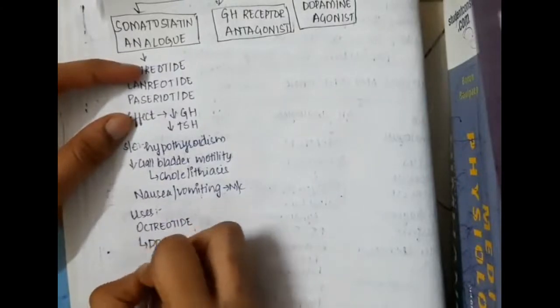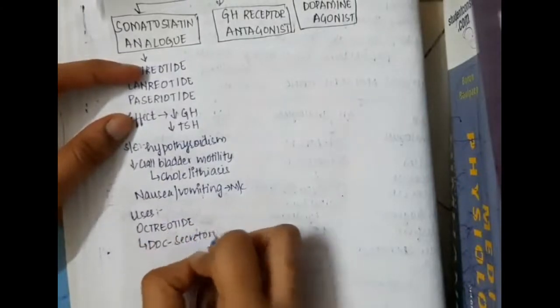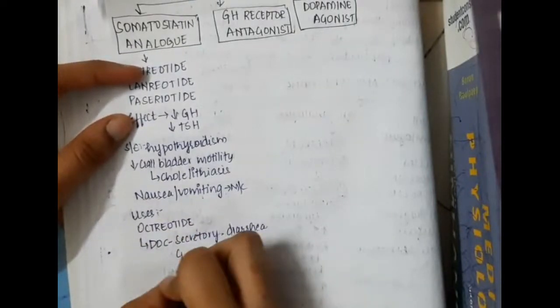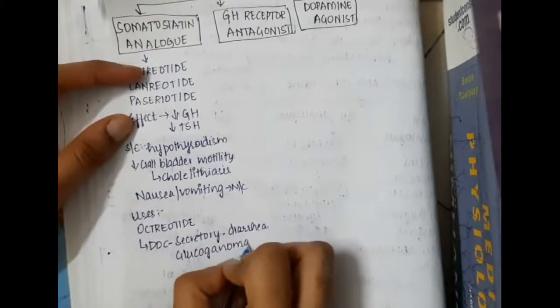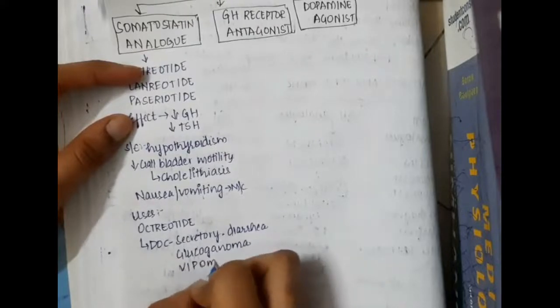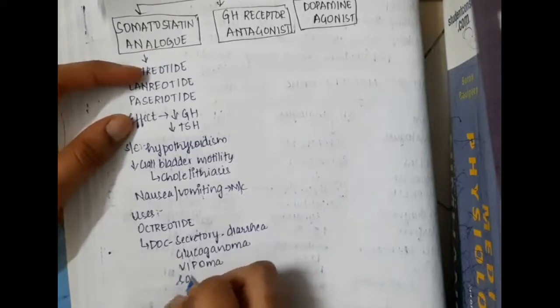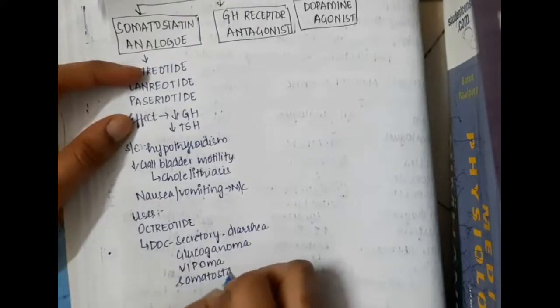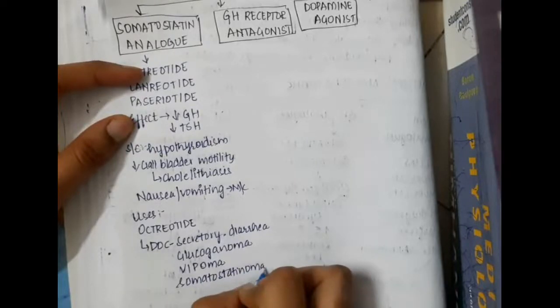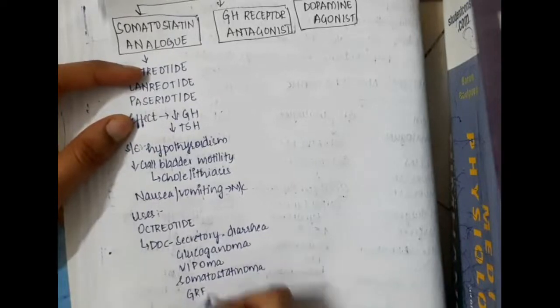Uses of somatostatin analogs: octreotide is the drug of choice for secretory diarrhea, glucagonoma, VIPoma, somatostatinoma, GRFoma, and acute variceal bleeding.